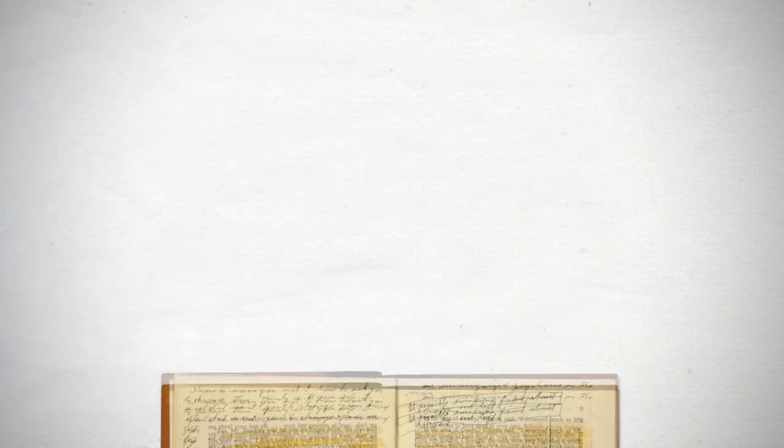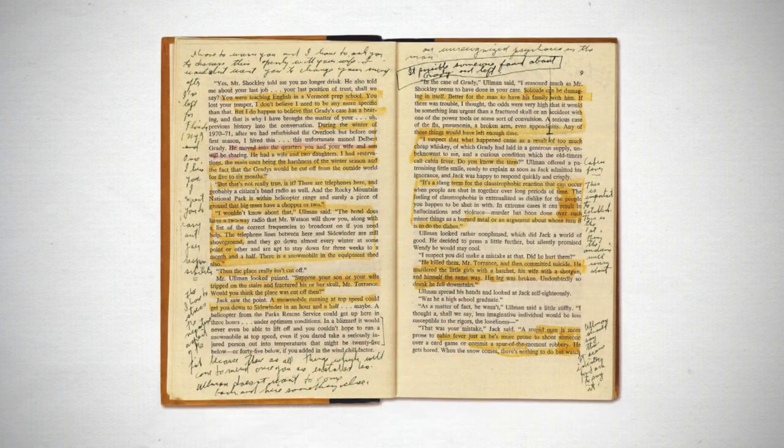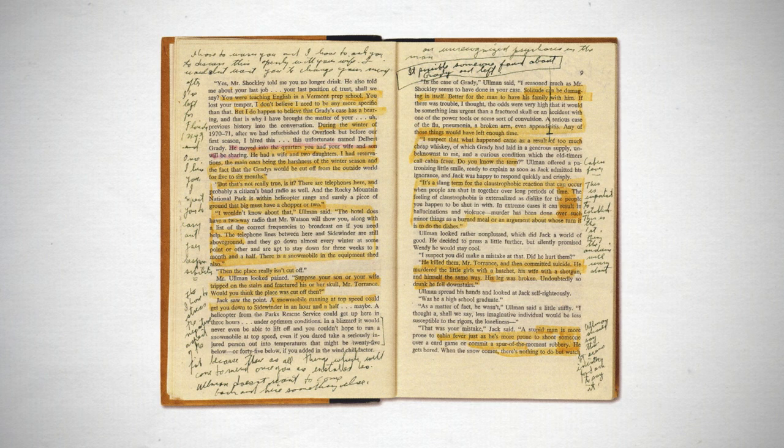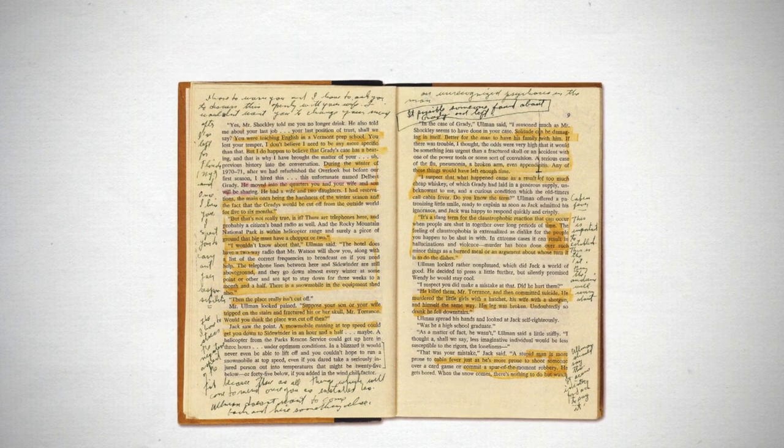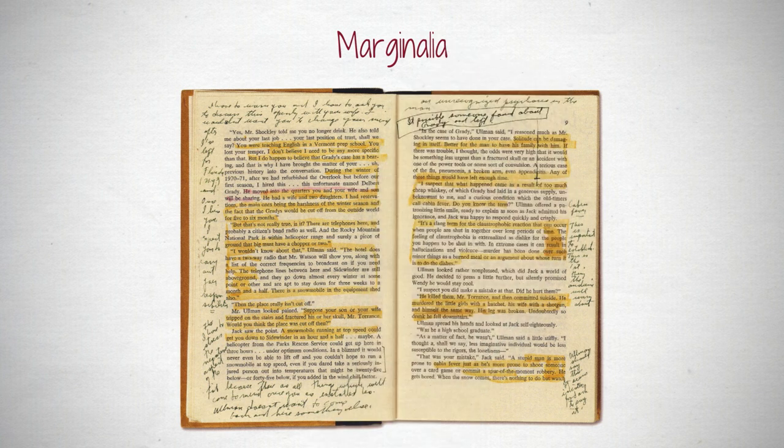This isn't unusual. Stanley Kubrick's notes inside The Shining is just one example of famous writers marking up the texts of other authors. All of this is called marginalia and it's one of the many reasons I prefer actual, physical books.